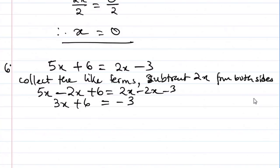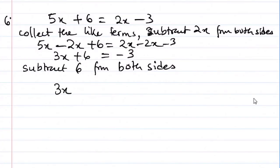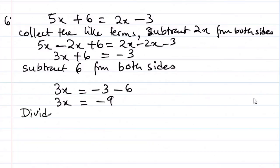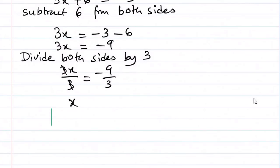Now we subtract 6 from both sides, so 3x equals to minus 3 minus 6. It's like saying you are owning 3 dollars and also owning 6 dollars — your total debt will be minus 9. So 3x equals to minus 9. We divide both sides by the coefficient standing by the variable, which is 3. So 3x over 3 and minus 9 over 3 — the 3s cancel out and our final answer is x equals minus 3.